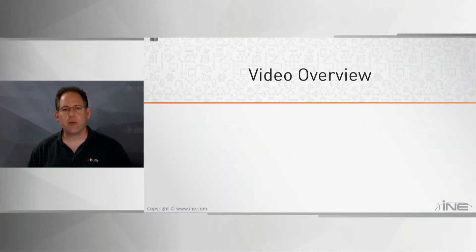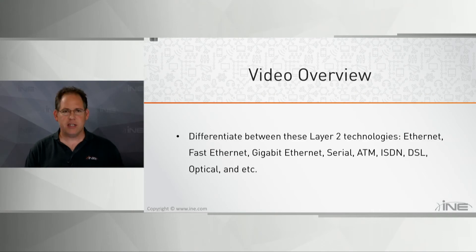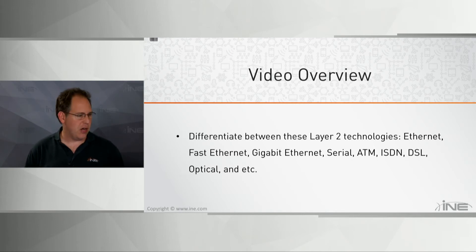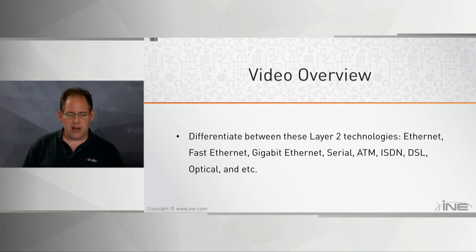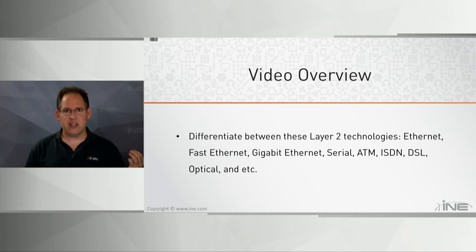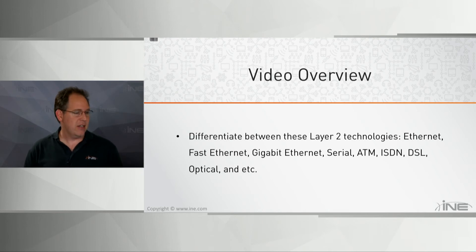In section 3.0 of the CCT routing and switching blueprint, it says to differentiate between layer 2 technologies, listing them from Ethernet down to optical. Right off the bat I have a problem with this bullet point — some of the things listed here are not layer 2 technologies, specifically DSL and optical.